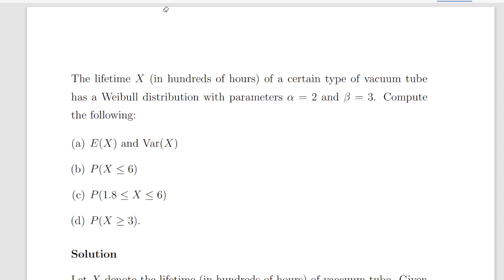In this presentation we are going to look at the Weibull distribution. The Weibull distribution has the following parameters: the shape parameter alpha and the scale parameter beta.